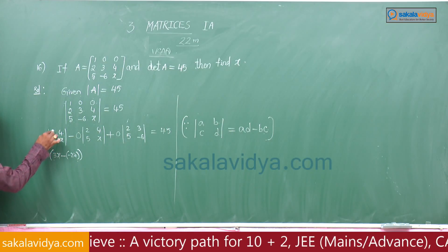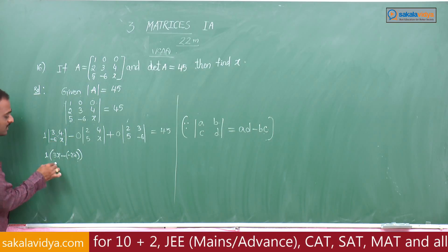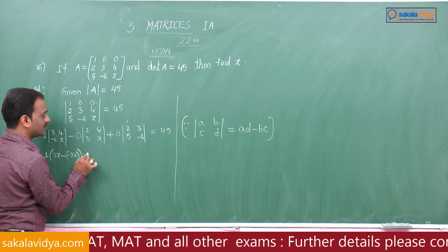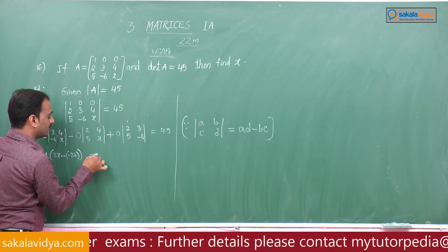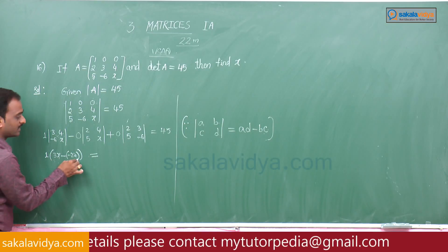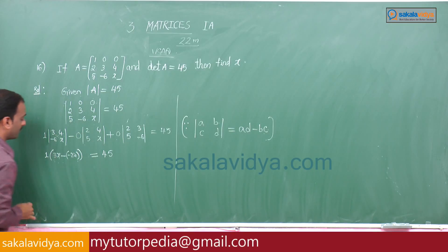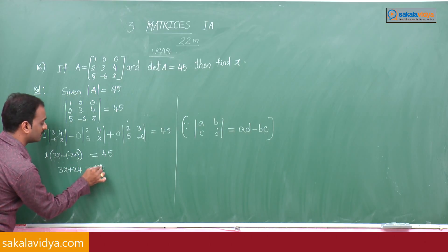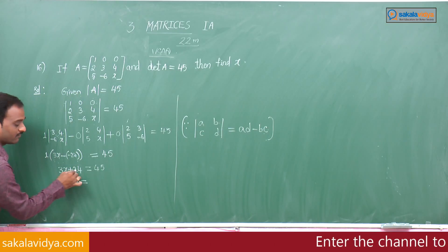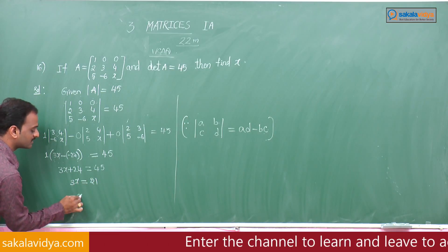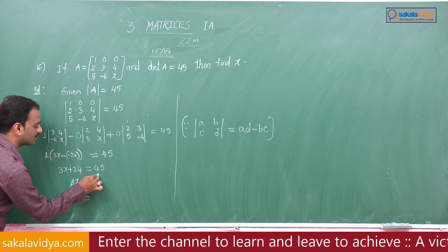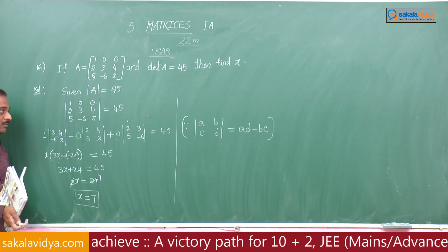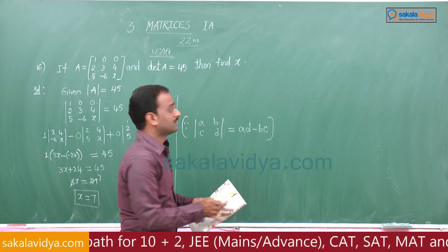So det of 3, 4, minus 6, x equals 3x minus of minus 24, giving 3x plus 24. The other terms are 0. So 1 into 3x plus 24 equals 45, meaning 3x equals 45 minus 24 equals 21, therefore x equals 7. This is an important 2-mark problem.